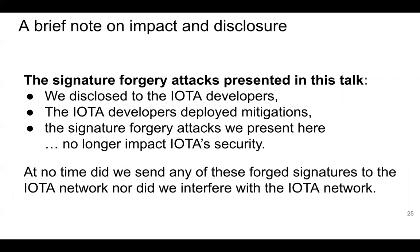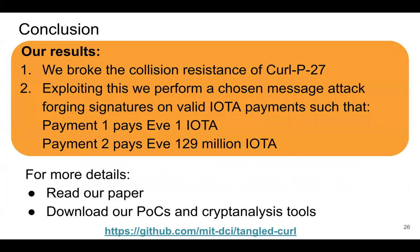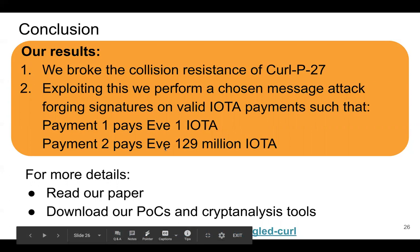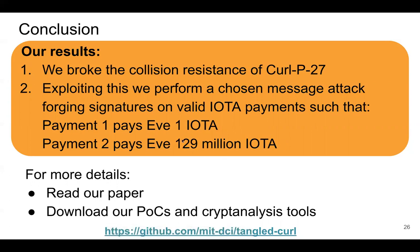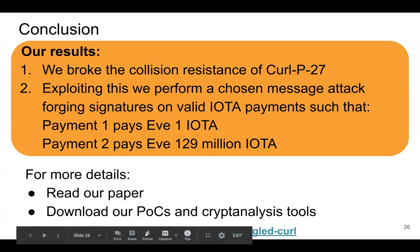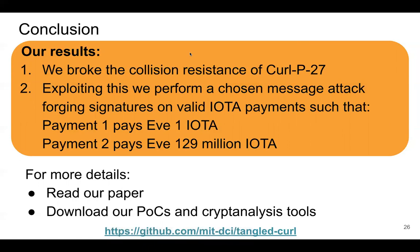The signature forgery attacks presented in this talk were disclosed to IOTA developers. They deployed mitigations and they no longer impact IOTA security. At no time did we send any forged signatures or payments to the IOTA network, nor did we interfere with it in any way — we ran all of our validation offline. In conclusion, we broke the collision resistance of curlP27, a ternary hash function, and exploited this to perform a chosen message attack forging signatures on valid IOTA payments. For more details, especially about engineering valid IOTA payments and exploiting multi-sig, please read our full paper. You can also download our proof-of-concept cryptanalysis tools to create your own IOTA collisions.